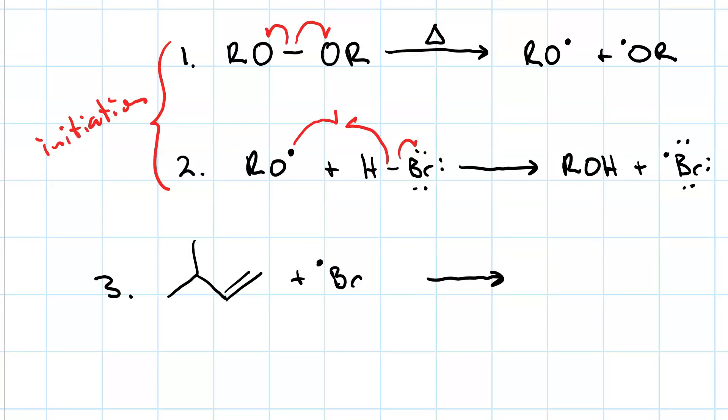The third step, radical addition to a pi bond, is the one that is responsible for the anti-Markovnikov regiochemistry. So in radical addition to a pi bond, you need three curved arrows. The bromine radical couples with one of the pi bond electrons, and the other pi bond electron forms a carbon radical.